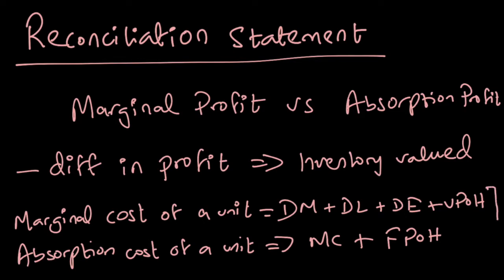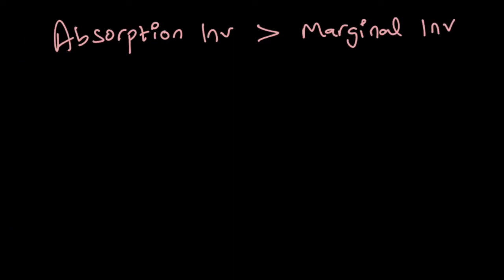The difference in inventory valuation between marginal and absorption costing comes down to fixed production overhead. Absorption inventory should always be greater than marginal inventory, and the difference is due to the fixed production overhead included in the absorption cost.